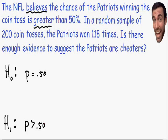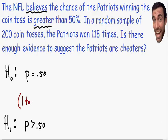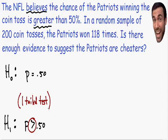Any time you see a greater than or less than symbol in your alternative hypothesis, this means you're using a one-tailed test. We will be using a one-tailed test, and I'm going to explain what this means more in the next step. Now let's move on to step number two.